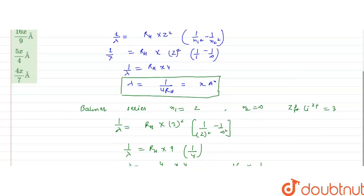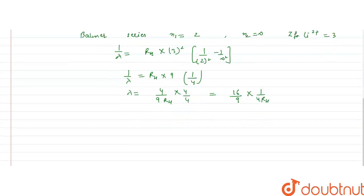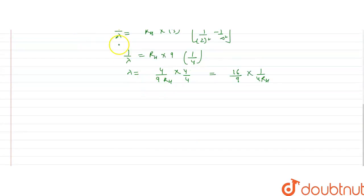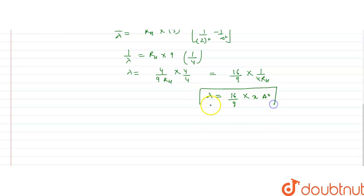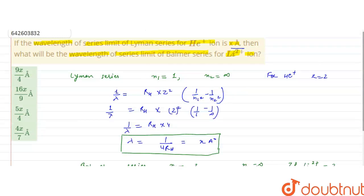Putting in the value, the wavelength in the case of lithium 2 positive ion for the Balmer series electronic transition is 16 by 9 X angstroms. So the correct option for this question is option B: 16 by 9 X angstroms. I hope you understood the solution. Thank you.